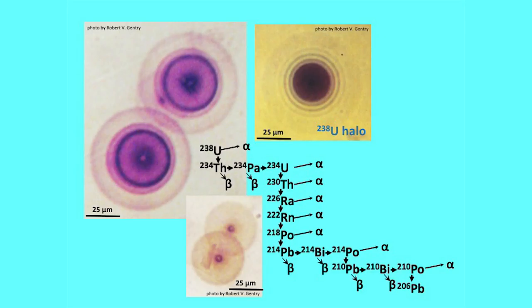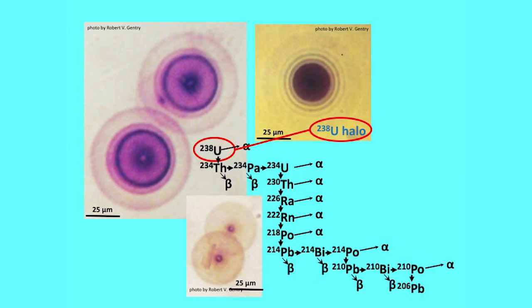The reason we call one a uranium-238 halo is that uranium-238 is decaying through all of its steps to produce eight different alpha particles and five different rings. So when you see five rings you know it must have been uranium-238. If you started somewhere along the way — like radon — you wouldn't produce five rings, you'd only produce four or fewer. The fact that you've got five rings means it's a uranium-238 halo.